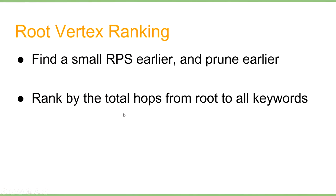Furthermore, we propose a root-vertex ranking strategy. The intention is that if we find a small RPS earlier, we can prune more aggressively. We rank all vertices according to their smallest possible v-norm — the total hops from roots to all keywords. It is implemented by performing G breadth-first searches, which is relatively negligible compared to the time complexity of algorithms QO and EO.